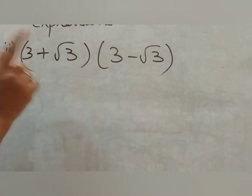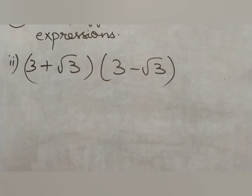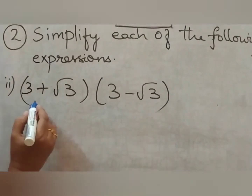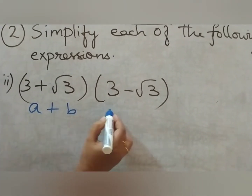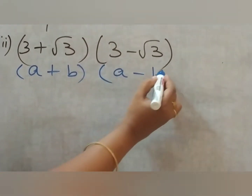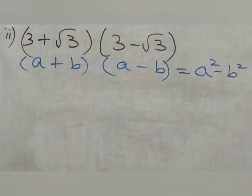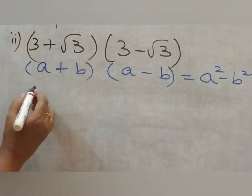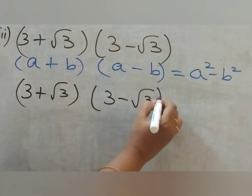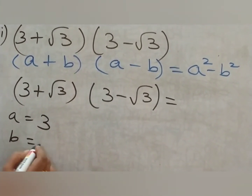The second problem says (3 + √3) into (3 − √3). This resembles (a + b) into (a − b). What is the formula for (a + b)(a − b)? The formula is a² − b². This is an identity. We are going to use this identity: (3 + √3)(3 − √3) equals a² − b². Here a is 3 and b is √3.